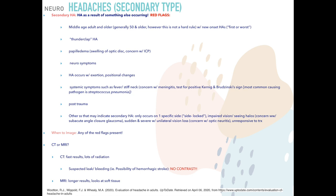When imaging is indicated, the question is CT versus MRI. CT provides fast results but delivers significant radiation. If there is any chance of a bleed or hemorrhagic stroke, contrast cannot be used. MRI is excellent — it evaluates soft tissue without radiation — but takes longer, making it less ideal in emergent situations.